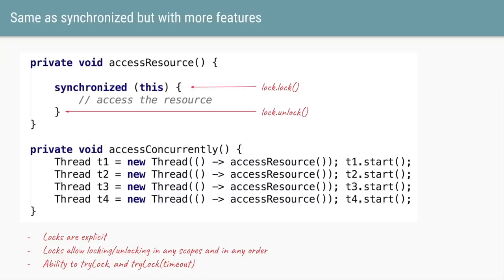If you've seen the synchronized keyword in Java, this is very similar. With synchronized, you could say synchronized on this — the current object — with opening and closing curly braces indicating where you access the shared resource. So synchronized's opening brace is similar to lock.lock() and the closing brace is similar to lock.unlock(). The difference is that synchronized is implicit — you can just make the method itself synchronized without creating a new variable — whereas locks are explicit because you have to create a variable for it.